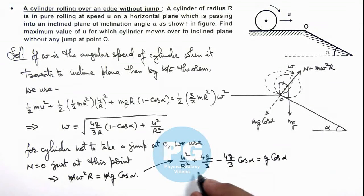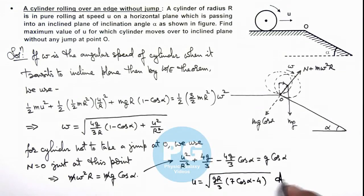And on simplifying this relation we get the value of u is equal to under the root of gR by 3 multiplied by 7 cos alpha minus 4. That is the result of this problem.